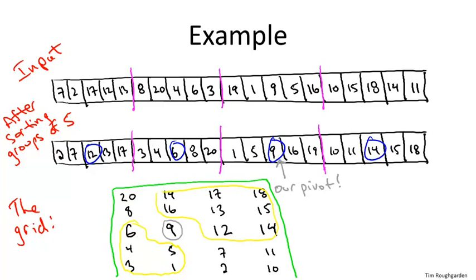That proof was hard work showing that the deterministic choose-pivot subroutine guarantees a 30-70 split or better. But we haven't yet proved that the algorithm runs in linear time. Why doesn't a guaranteed 30-70 split automatically guarantee linear time? Because we had to invoke another recursive call to find this pivot. Maybe it was a Pyrrhic victory — maybe we worked so hard to compute the pivot that it outweighs the benefit. We still have to prove that's not the case. We'll finish the analysis in the next video.